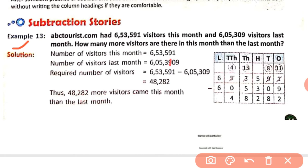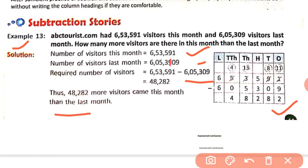Let's start to solve this. We write: number of visitors this month is equal to 653,591, and number of visitors last month is 655,309. We have to do a comparison between this month and last month. So we subtract 653,591 minus 655,309. After subtracting, we get a difference of 48,281. Thus, 48,282 more visitors came this month than last month.